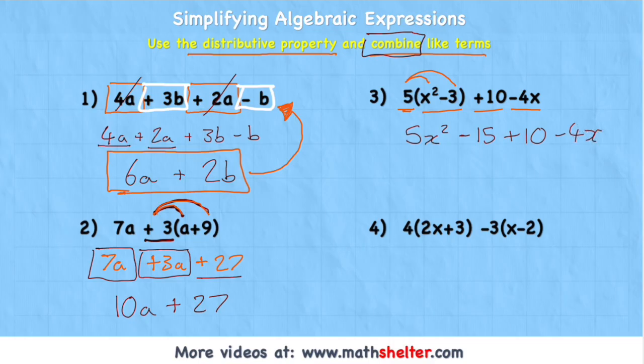And I have now distributed and removed this bracket. Now I can look for like terms. And in this example, I can find some constant terms with my negative 15 and my positive 10. So negative 15 plus 10 would be negative 5. So I would have 5x squared, negative 5 minus 4x.